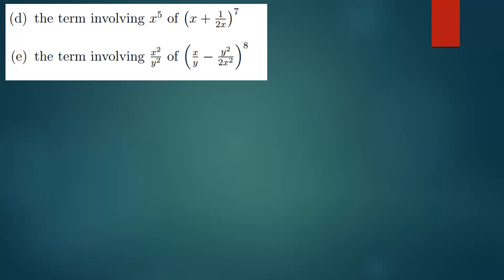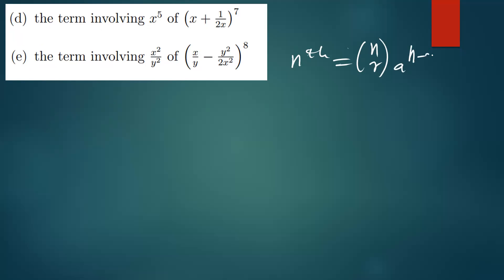We have parts D and E, which are very simple. This one is straightforward — they're asking us to find the term involving x to the power 5 in the expansion. What you need to do is use the general term formula to find any term, which is n choose r, then a to the n minus r, b to the r. This is the formula we're going to use.